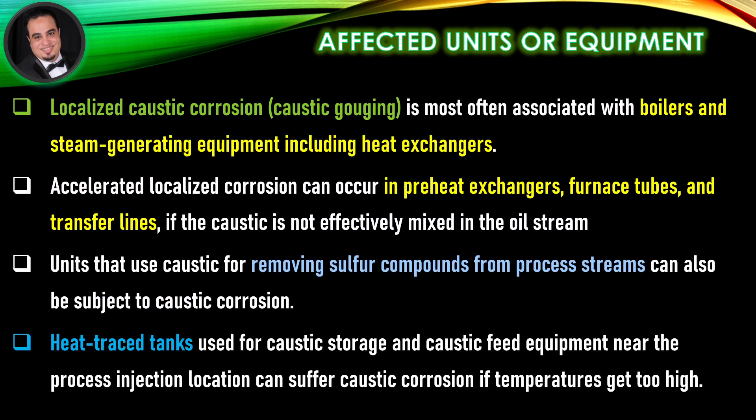Affected units or equipment: Localized caustic corrosion, or caustic gouging, is most often associated with boilers and steam generating equipment, including heat exchangers. Accelerated localized corrosion can occur in preheat exchangers, furnace tubes, and transfer lines if the caustic is not effectively mixed in the oil stream. Units that use caustic for removing sulfur compounds from process streams can also be subject to caustic corrosion. Heat trace tanks used for caustic storage and caustic feed equipment near the process injection location can suffer caustic corrosion if temperatures get too high.